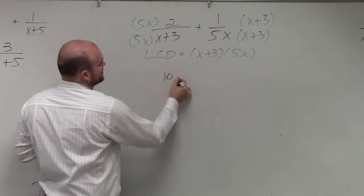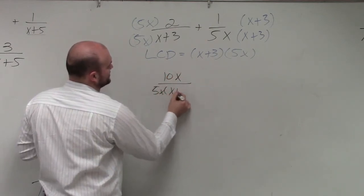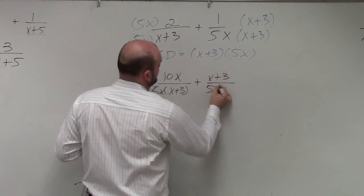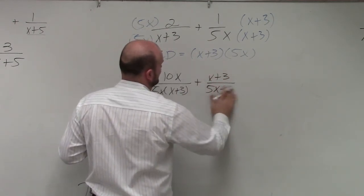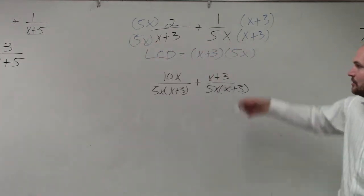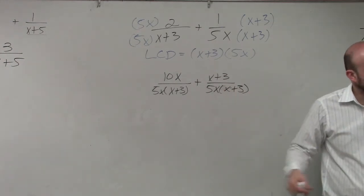So I have 10x over 5x times x plus 3 plus x plus 3 over 5x times x plus 3. Is everybody following through? I'm showing a lot of steps. You can probably skip this next step if you want to go to the answer.